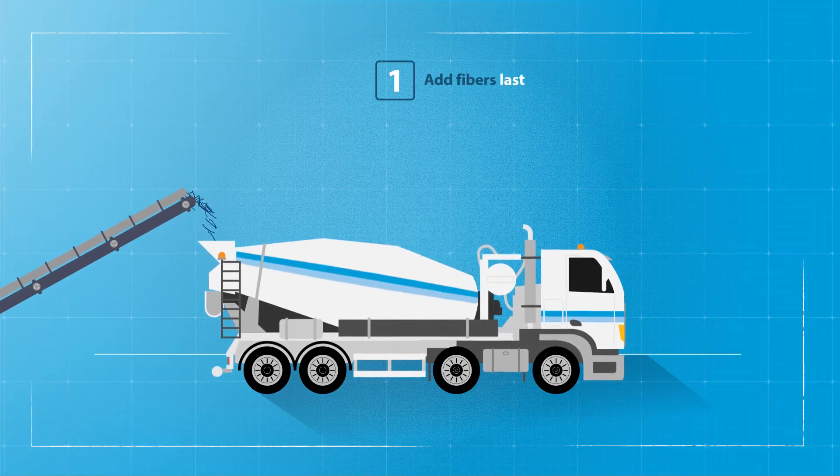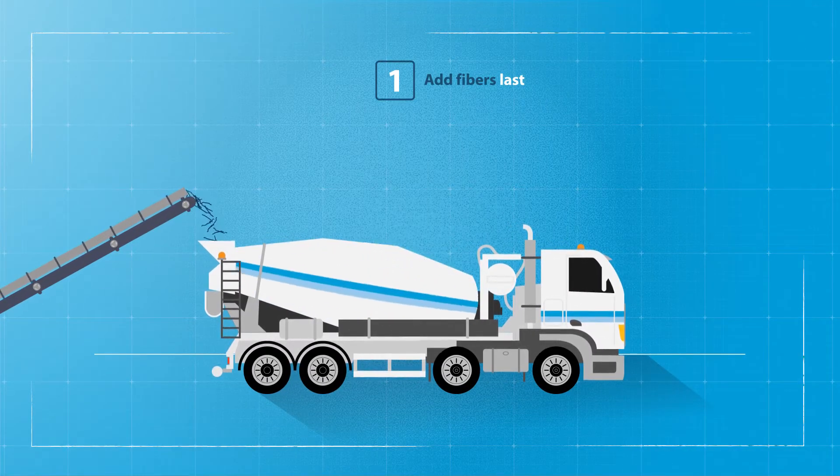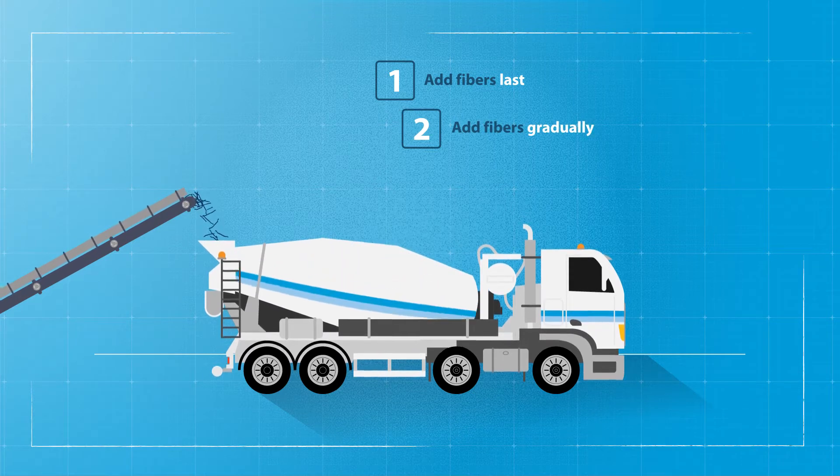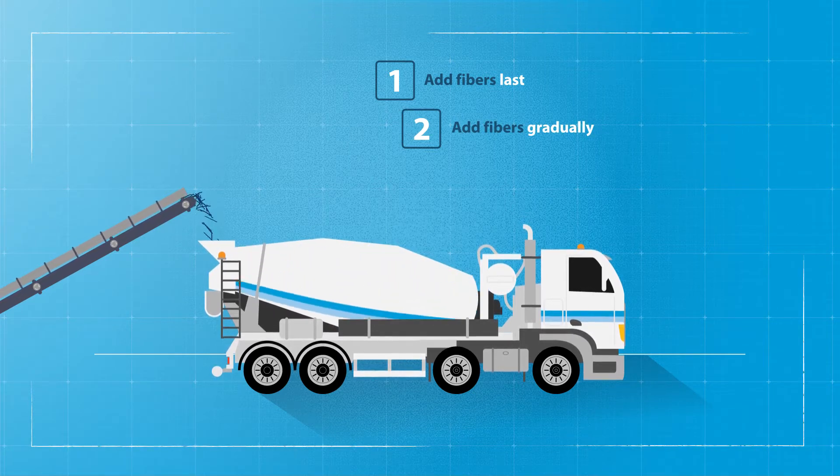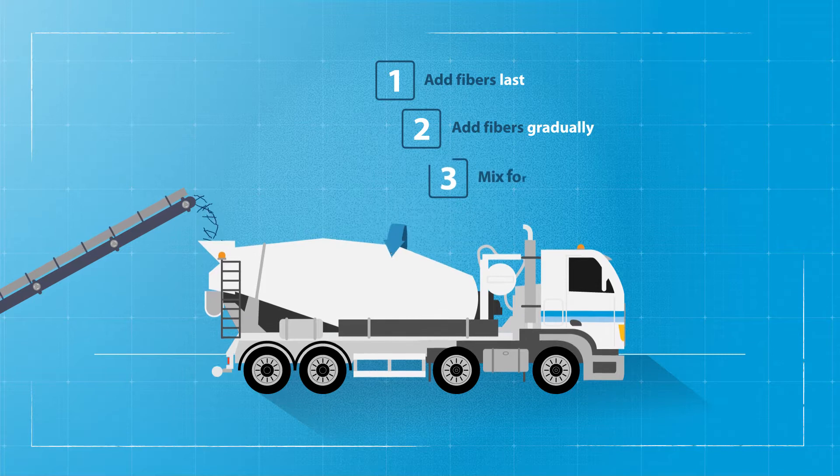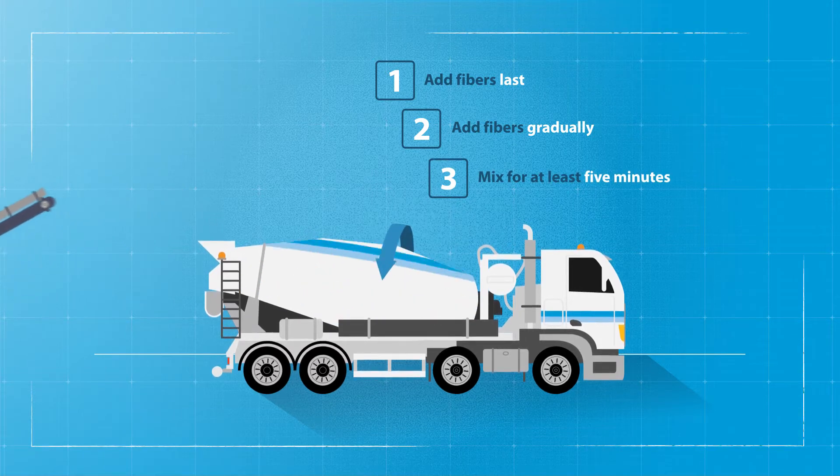Of all components, add the fibers last to the mixer. Add them gradually at a maximum dosage rate of 40 kg per minute. Mix for at least 5 minutes at the highest drum speed.